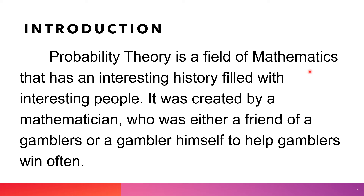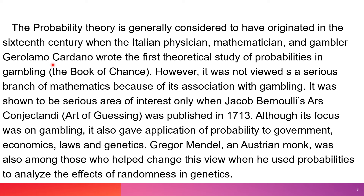Probability theory is a field of mathematics with an interesting history. It was created by a mathematician who was either a friend of a gambler or a gambler himself, to help gamblers win. The probability theory is generally considered to have originated in the 16th century when the Italian physician, mathematician, and gambler Gerolamo Cardano wrote the first theoretical study of gambling, the Book of Chance. However, it was not viewed as a serious branch of mathematics because of its association with gambling.